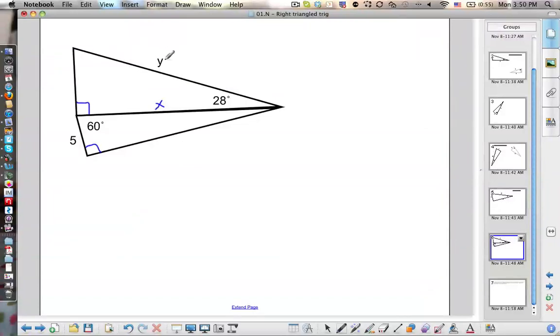So if I want to find out what x is, I have my adjacent side, and then this is the hypotenuse because it's opposite of the right angle.